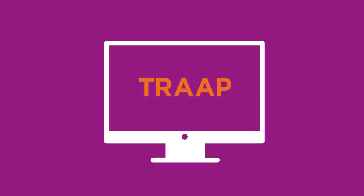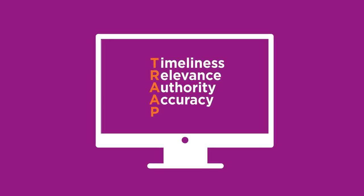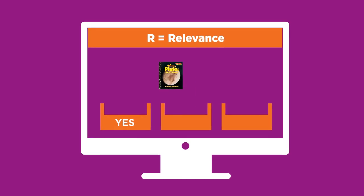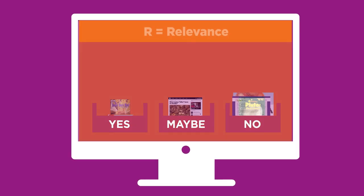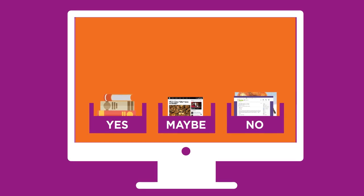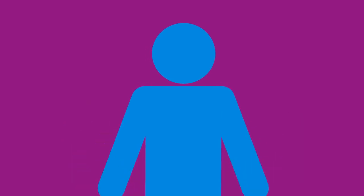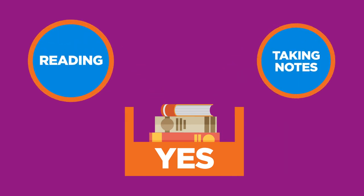In the OSLIS video Evaluating and Choosing Sources, we explained how to use the TRAP method to evaluate and sort your potential sources into three piles: yes, maybe, and no. Now that you have a selection of yes sources — those that you determined are just right for your topic — what do you do next? It's time to dig into the yes pile for answers to your research questions by reading and taking notes.